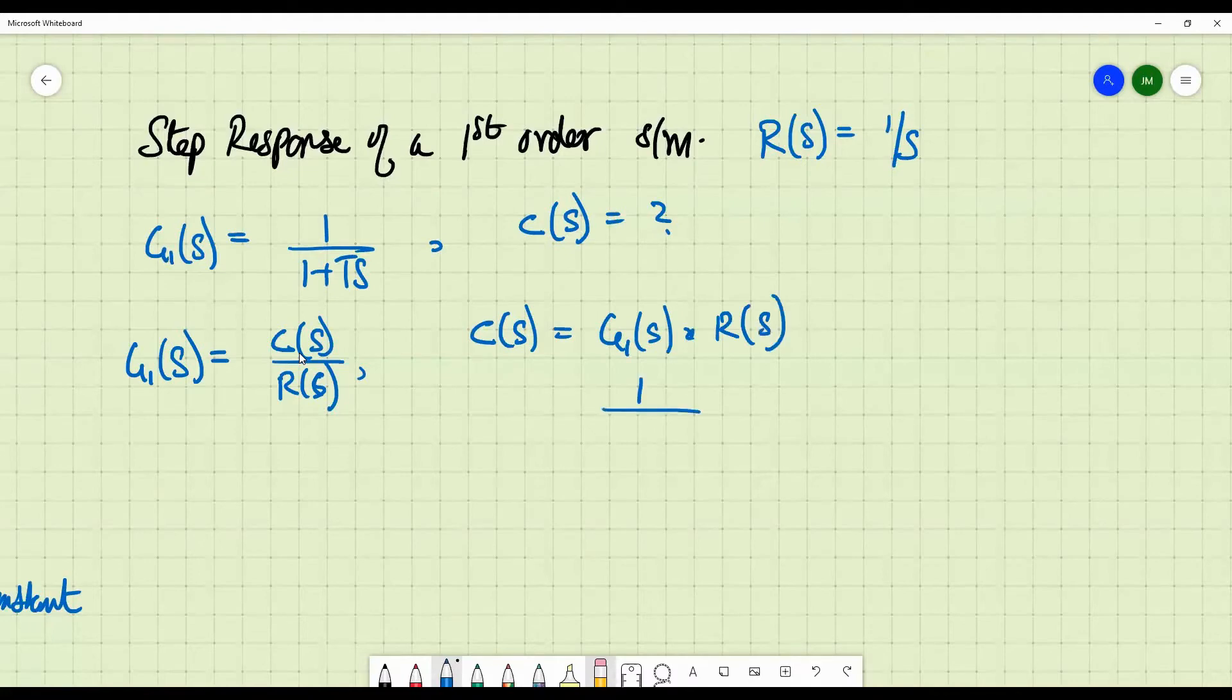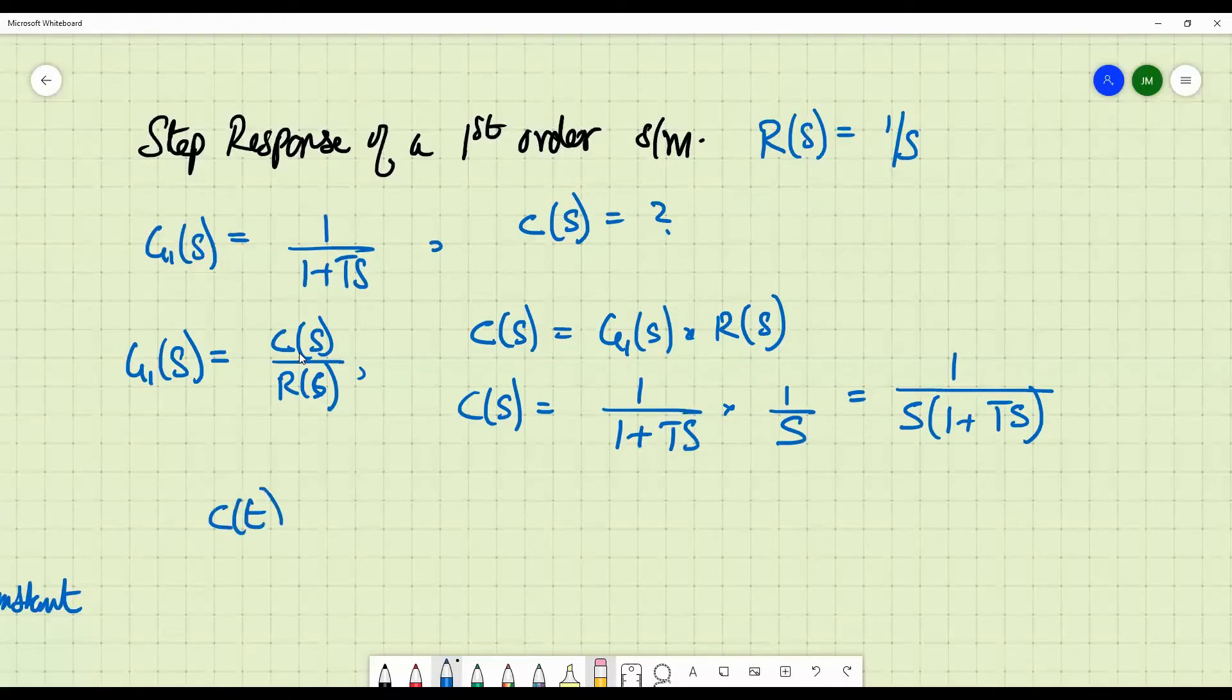Now, what is G1 of S? 1 by 1 plus T S. What is R of S? 1 by S. So this is nothing but 1 by S into 1 plus T S. That is C of S. Now, in the Laplace domain, C of S is equal to 1 by S into 1 plus T S doesn't give us much useful information. What we need to find out is, we need to find out the time domain response, C of T. So, how do you get C of T? C of T you get from the Laplace inverse of C of S. That is nothing but Laplace inverse of 1 by S into 1 plus T S.